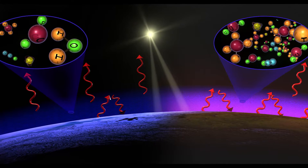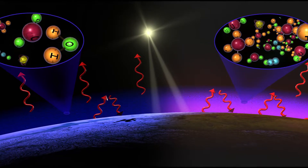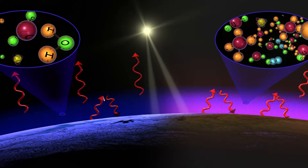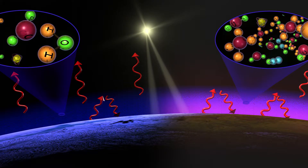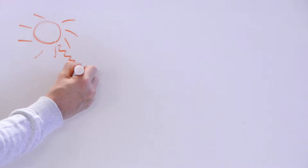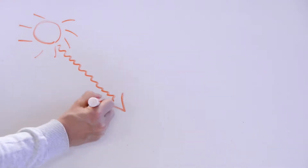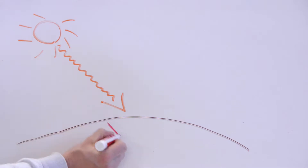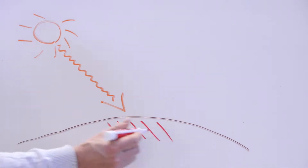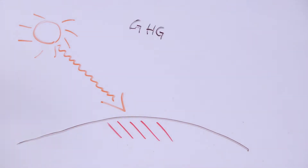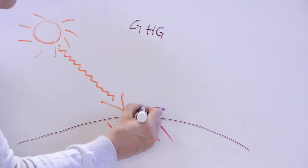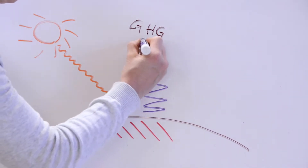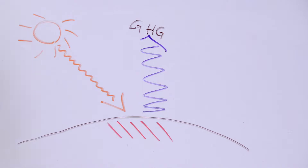Now that we understand that everything emits radiation, what about the greenhouse effect? The sun emits shortwave radiation. The radiation is absorbed by the surface, which then warms. The surface emits longwave radiation towards the atmosphere.